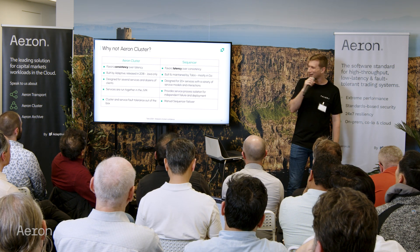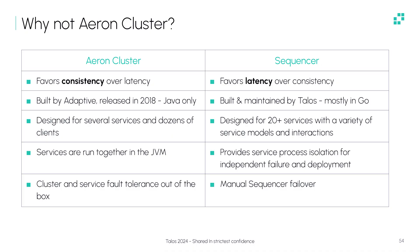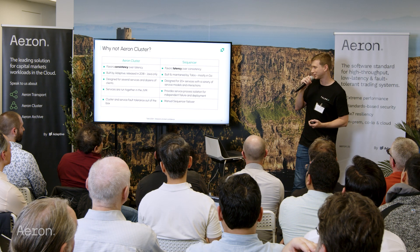Why not just use Aeron cluster? We started in 2018 when Aeron cluster was really in its infancy publicly, and it's all written in Java whereas we use a lot of Go at Talos. But there's a more fundamental reason around consistency versus latency. In cluster, you make sure all messages are journaled on multiple replicas before they're processed. The way we've built the system, because we're a trading system, we process messages before they're journaled — they're journaled asynchronously. This works because if we miss a message or crash, we can usually go to the exchange, ask for the trades we missed, and resume processing.